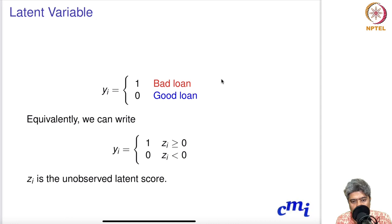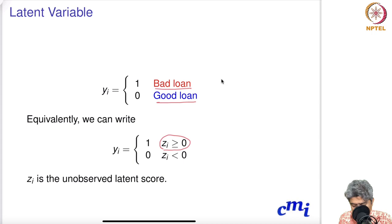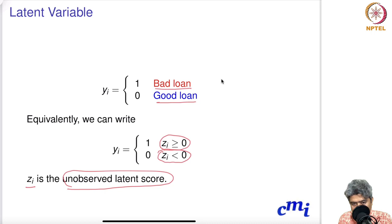In order to model this, we bring in the concept of a latent variable. We are defining yi equal to one if it is a bad loan and zero if it is a good loan. We can also define it as yi equal to one if zi is greater than or equal to zero, and zero if zi is negative. Here zi is some unobserved latent score, sometimes also known as a potential score.